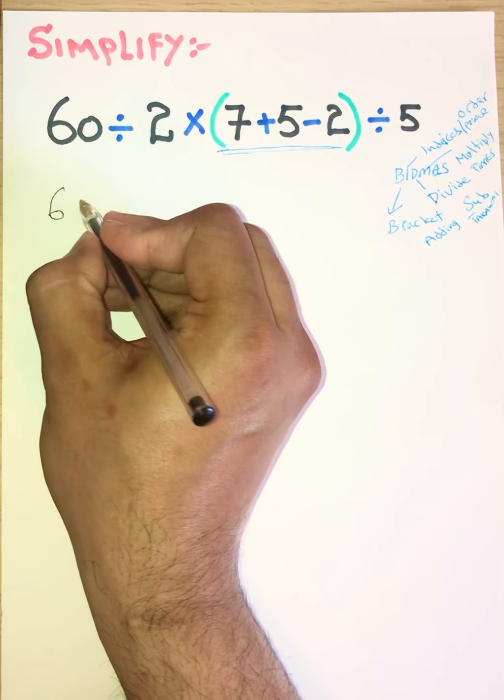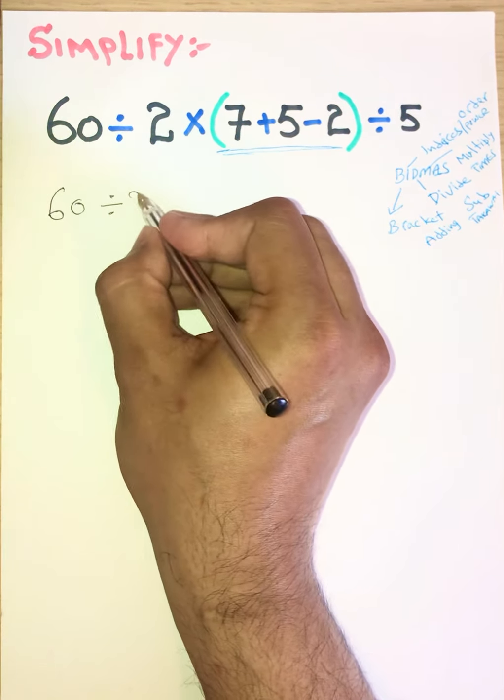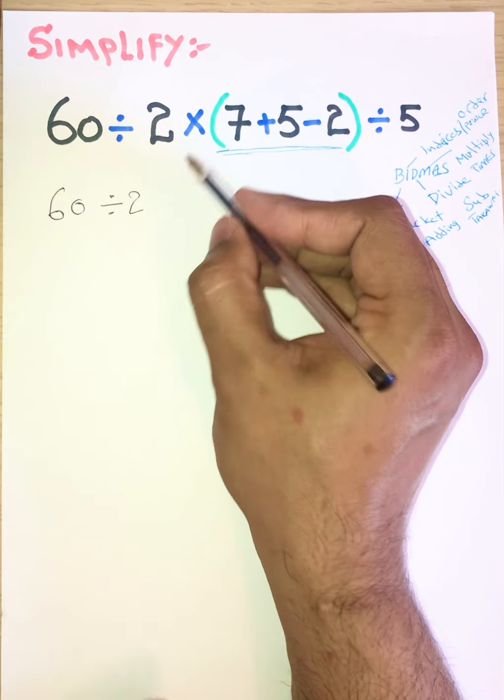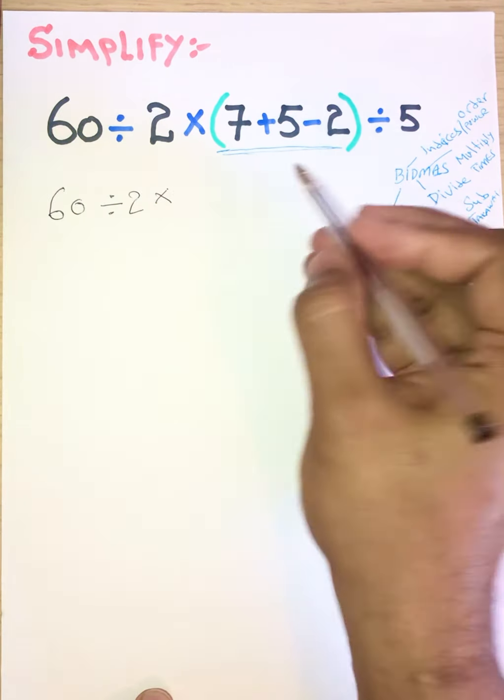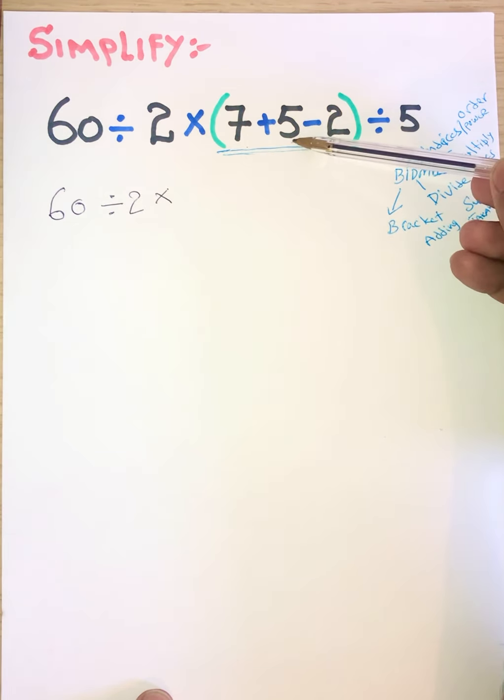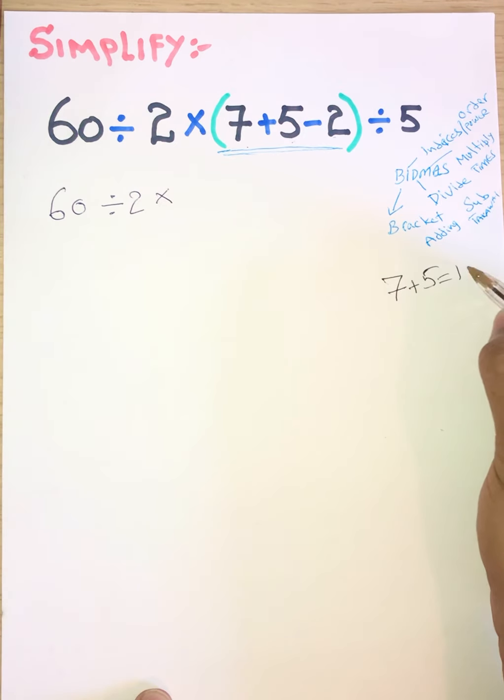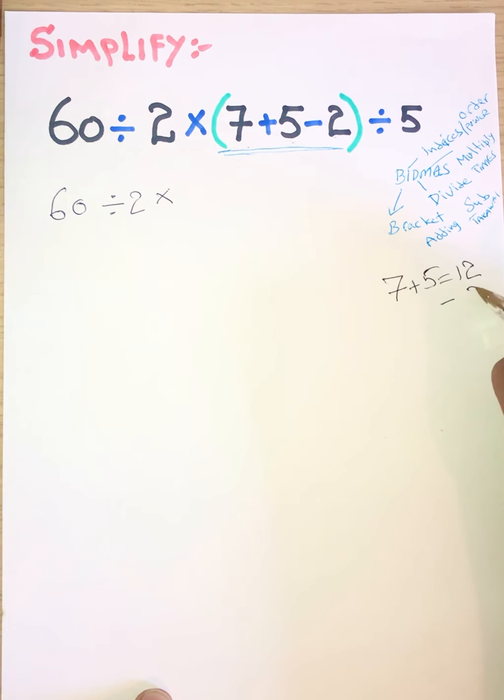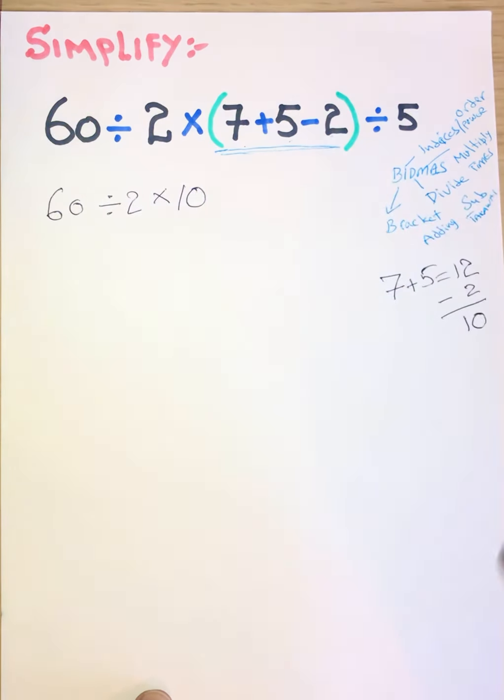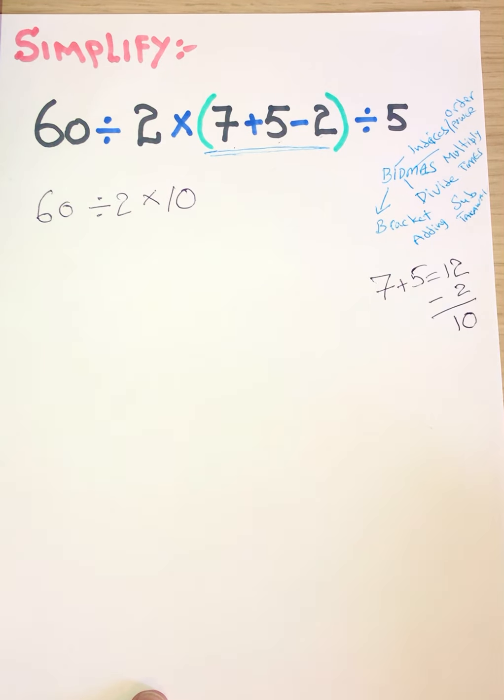So we leave as it is 60, divided by 2, and 2 times brackets. Whatever comes in bracket - you can add and subtract or you can subtract or add any value. So 7 add 5 which is 12, and subtract 2 which is 10. We got 10 here. Now you can see we got 10 value here and this is the final value.